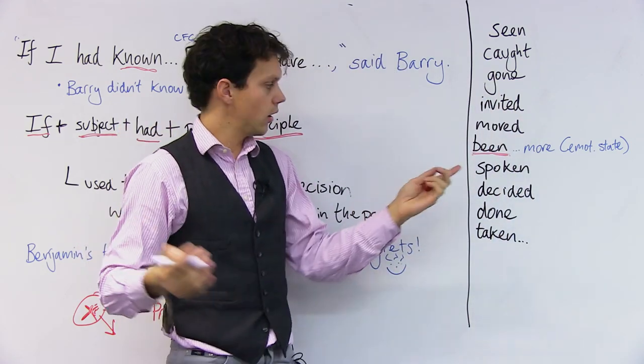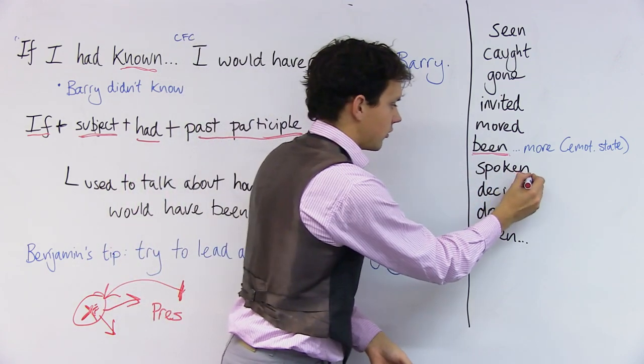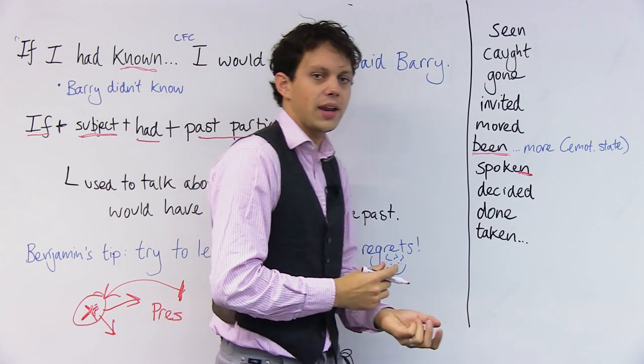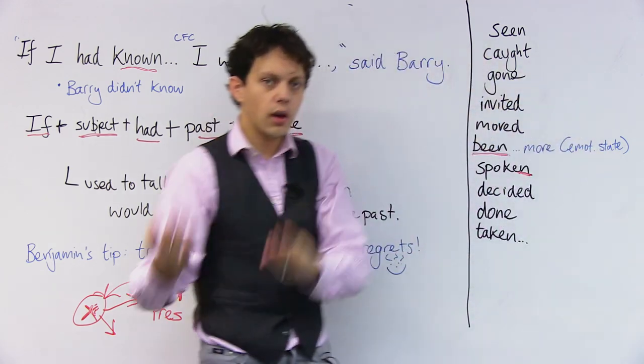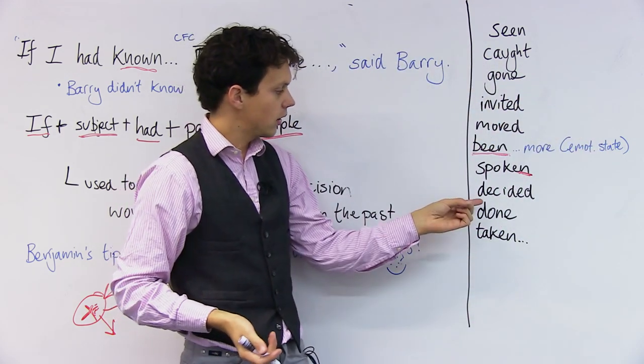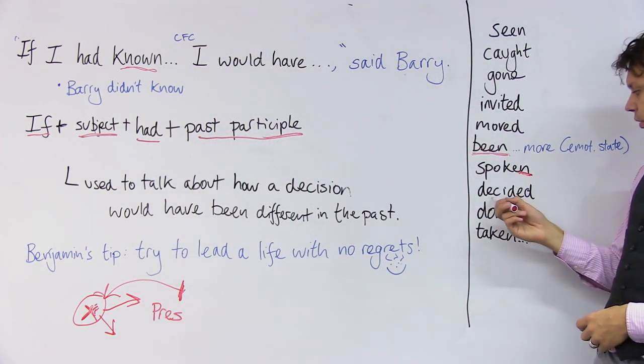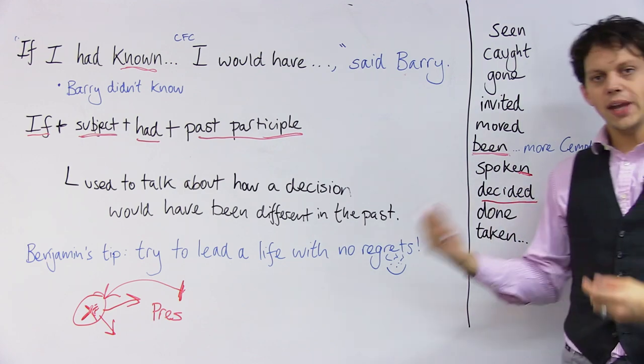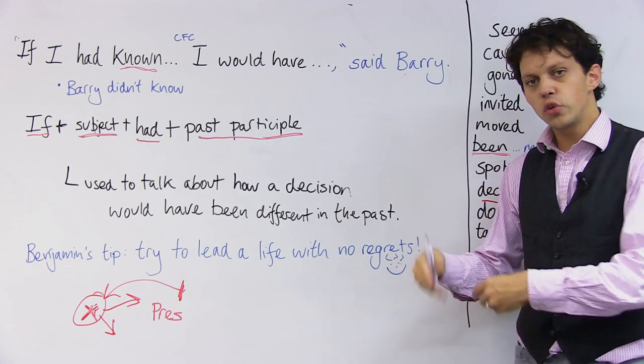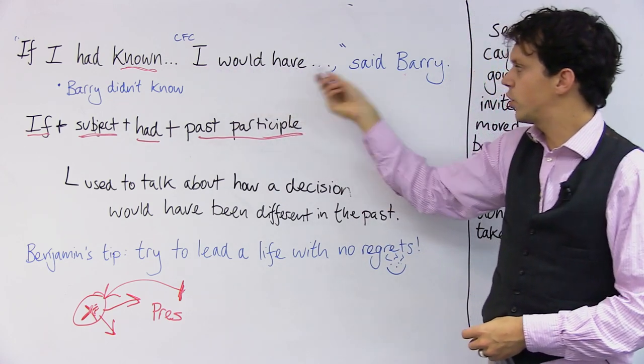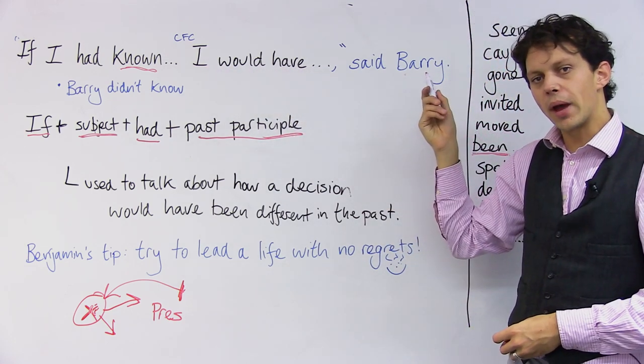If I had spoken... So it's just in the past tense. If I had spoken to my friend, he would have come to the football match. We could use decided here for Barry. If Barry had decided to read the newspaper in the morning, he would have gone to the football match.